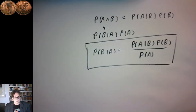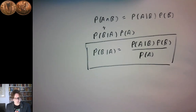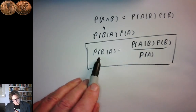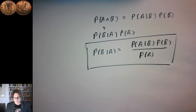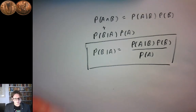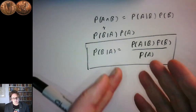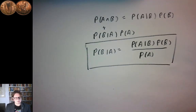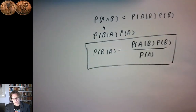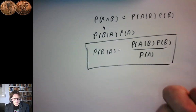Bayes' Theorem is very useful and very important, because what it allows us to do is switch around the order of conditionality. Here we have A conditional on B; here we have B conditional on A. It's quite frequent that we're trying to work out one from the other. In a subsequent lecture we'll look at Naive Bayes, a machine learning technique that uses Bayes' Theorem together with assumptions about conditional independence. Much of machine learning really is about that.